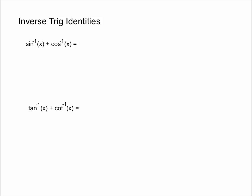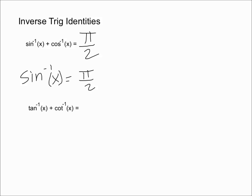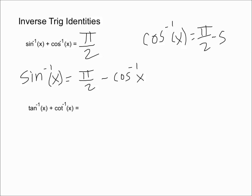The first identity states that the inverse sine of x plus the inverse cosine of x — arc sine and arc cosine — are equal to pi over 2. So whenever you have the inverse sine of x, you can convert that into pi over 2 minus the inverse cosine of x. And the same goes for cosine: if you have the inverse cosine, you can convert that into pi over 2 minus the inverse sine. That is our first inverse trig identity.